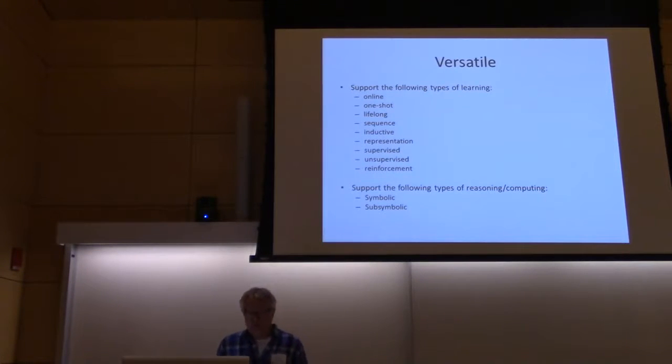Another thing is that we want the system to be versatile, which can be decomposed into many different things. We want it to support a lot of different types of learning, for example online learning, one-shot, lifelong learning, sequence learning, inductive learning, representation learning also called feature learning, supervised, unsupervised learning and reinforcement learning. On the reasoning side we also want it to be versatile, supporting both symbolic and sub-symbolic reasoning or computing.